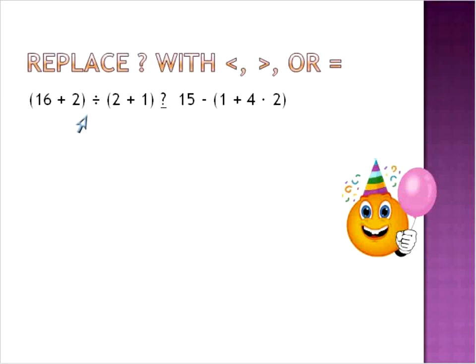I'll just do one more. It's a little bit bigger and has more grouping symbols - in other words, more parentheses. 16 plus 2 is 18, and 2 plus 1 is 3. So first we solved what was inside of the parentheses. We want to leave our space there for whatever symbol will go in there. And then we have 15 minus, and inside of our grouping symbols we have 1 plus 4 times 2.